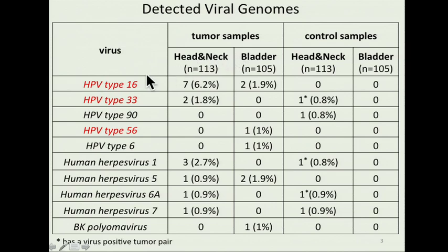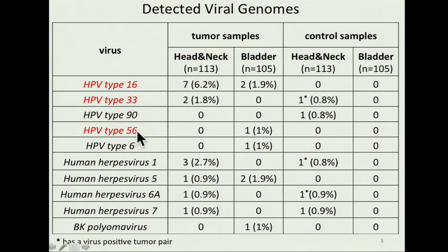We could divide detected viruses into three groups: different types of HPV viruses, human herpes viruses, and one case of a polyoma virus-positive bladder tumor. HPV infected 8% of head and neck tumors and 4% of bladder cancers. Most cases are represented by so-called high-risk types of HPV, such as type 16, 33, and 56. We do not see these viruses in the control pairs, except for one case — but this positive control case also has a positive tumor pair, probably a tumor contamination event as discussed in yesterday's talks.